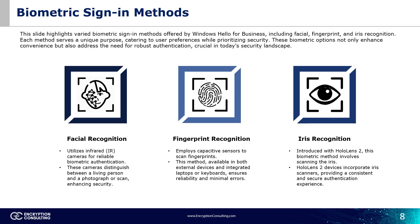First, facial recognition. This method verifies identity based on facial features and measurements using infrared cameras. The utilization of IR cameras enhances the robustness of facial recognition systems by allowing them to distinguish between genuine facial features and artificial replicas such as photographs or masks.